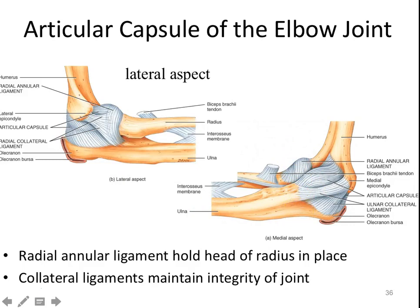You do not need to memorize the different ligaments of the elbow, but there are lots of them making up that capsule. Many of the arrangements are analogous to what we'll see in the knee — for example, we'll see a radial collateral ligament, an ulnar collateral ligament, and we'll see those collateral ligaments in the knee as well.